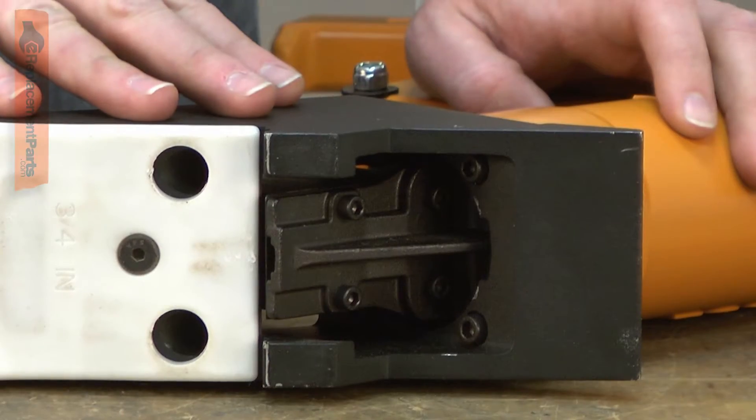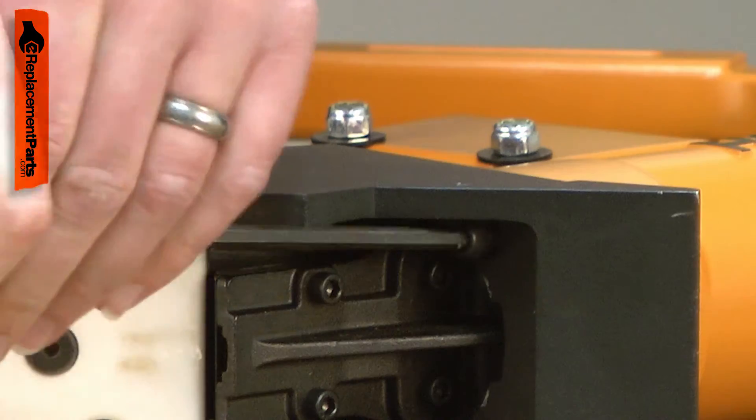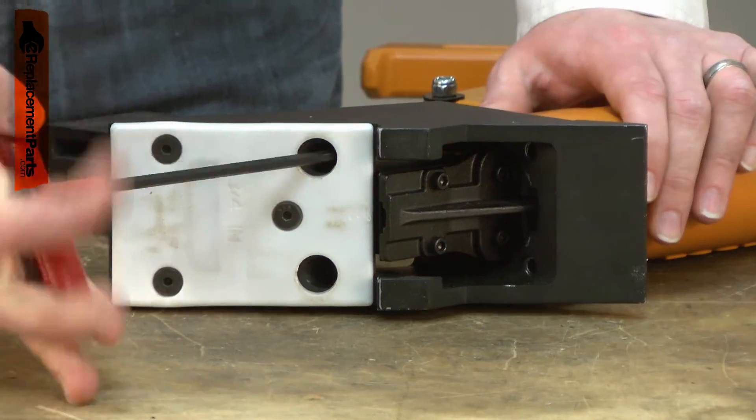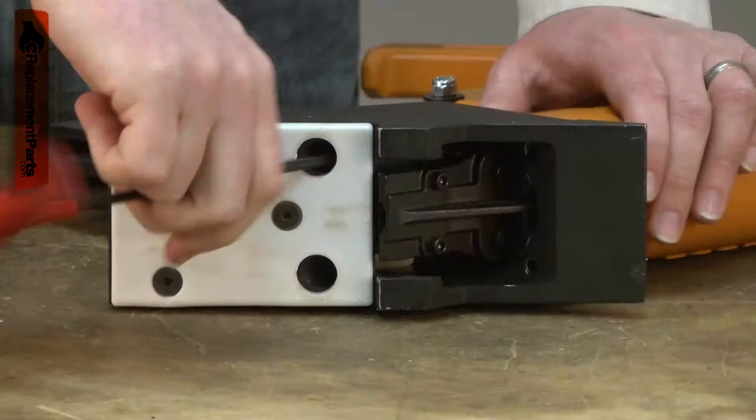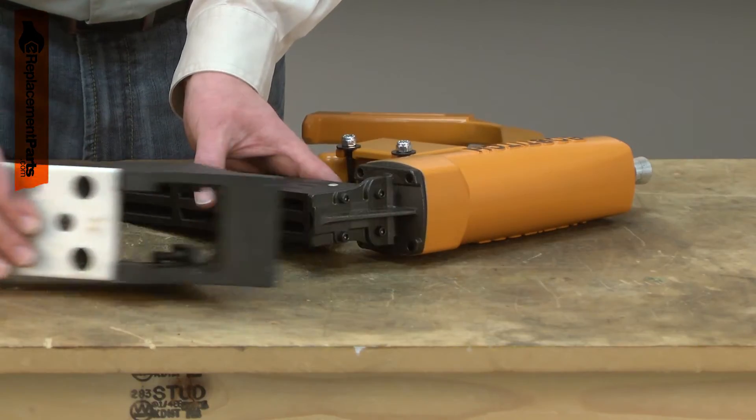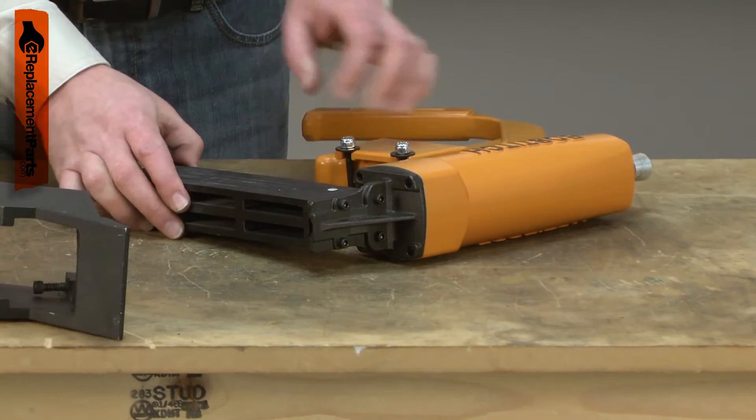I'll begin by removing the base from the stapler. It's held in place with four screws. Now I can remove the base from the stapler and the magazine and nose piece.